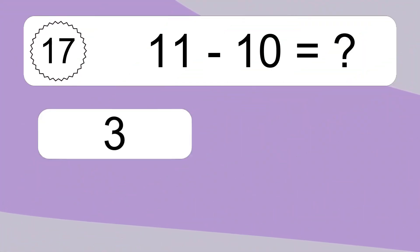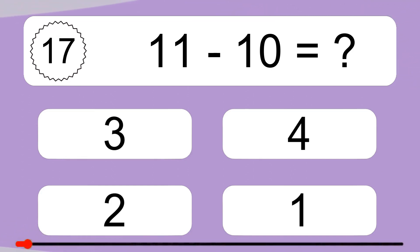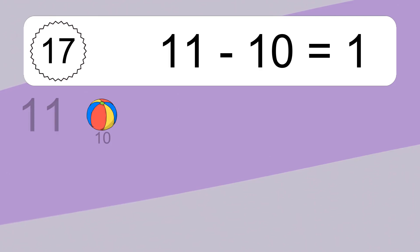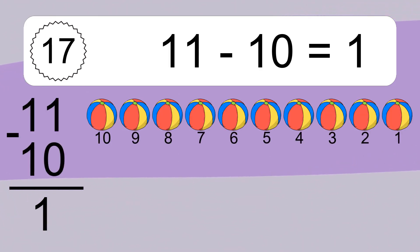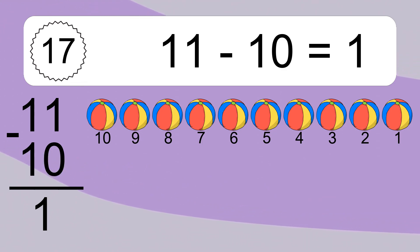11 minus 10 equals what? 11 minus 10 equals 1. Let's count it: 10, 9, 8, 7, 6, 5, 4, 3, 2, 1.